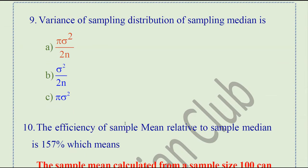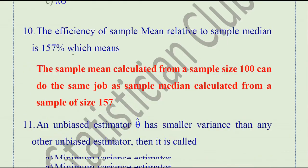Question number 9. The variance of the sampling distribution of the sample median is pi sigma square over 2n. This is the right answer — pi sigma square over 2n is the variance of the sampling distribution of the sample median.